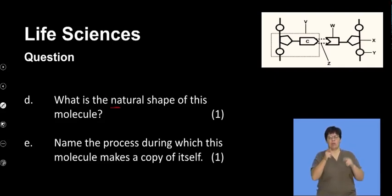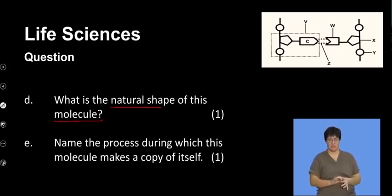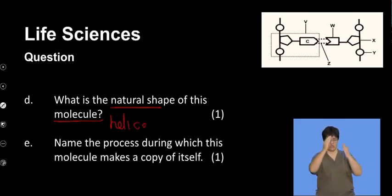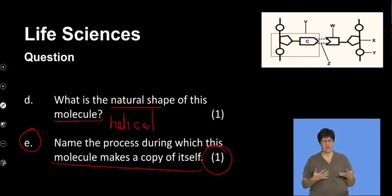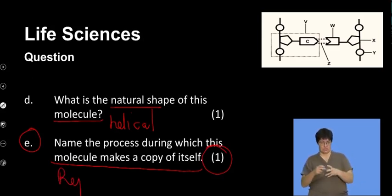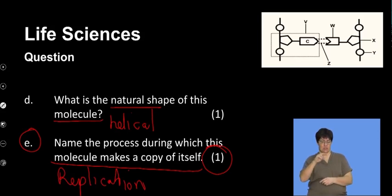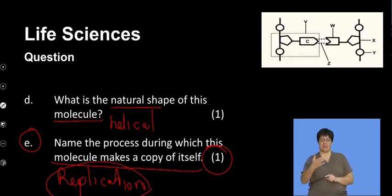The next question asks for the natural shape of this molecule. Due to the chemical bonding between complementary base pairs, DNA takes on a helical shape — the natural structure of DNA is helical. The final question asks to name the process during which this molecule makes a copy of itself. We've spent the second half of this lesson on that: it is DNA replication, and we refer to that model as the semi-conservative model of replication.